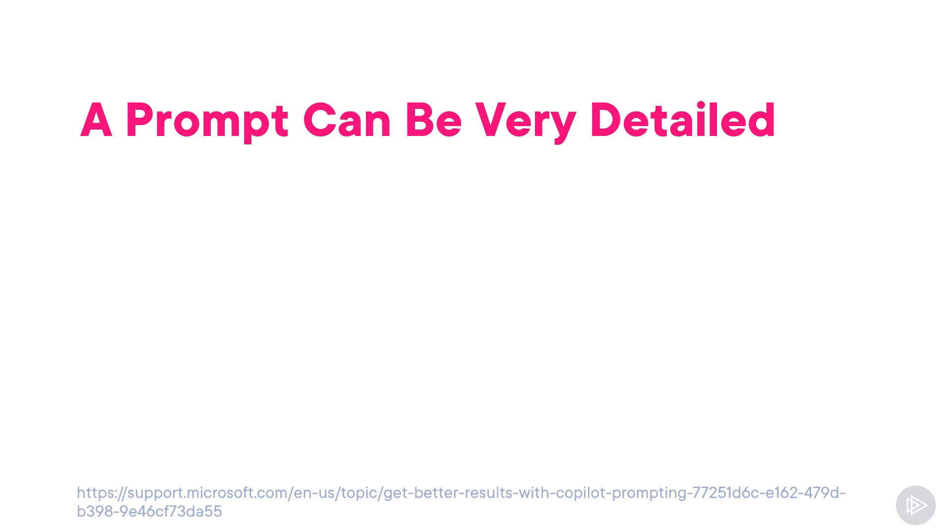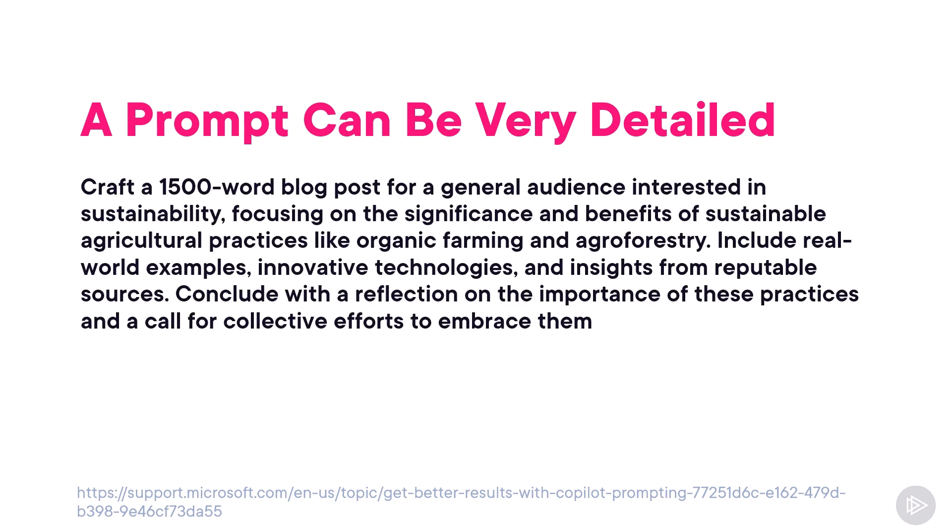A prompt can also be very detailed. For the same ask, instead you could tell Copilot to craft a 1,500-word blog post for a general audience interested in sustainability, focusing on the significance and benefits of sustainable agricultural practices like organic farming and agroforestry. Include real-world examples, innovative technologies, and insights from reputable sources. Conclude with a reflection on the importance of those practices and a call for collective efforts to embrace them. The result will still be a blog post about sustainable practices in agriculture, but we really told Copilot what we wanted, so we will get a better result.